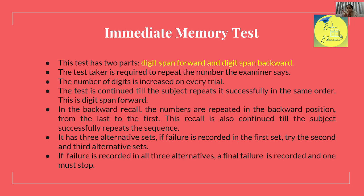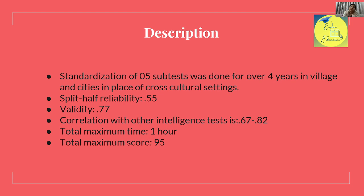The digit span increases with each trial. The test is continued until the subject can no longer successfully repeat the sequence. In Digit Span Backward, the subject must repeat the numbers in reverse order — from the last digit to the first. This recall is also continued until the subject can no longer repeat the sequence correctly. The test has three alternative sets; if failure is recorded on the first set, the second and third alternatives are tried. If failure is recorded on all three alternatives, the test is stopped.